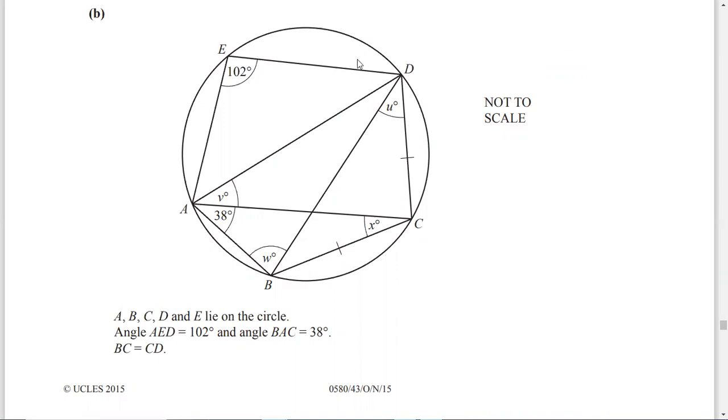According to this question, ABCDE lie on circle. Information of two angles are given, that is angle AED is 102 and angle BAC is 38, and very important information, BC is equal to CD. If BC equal to CD, that means these two sides are equal in length.